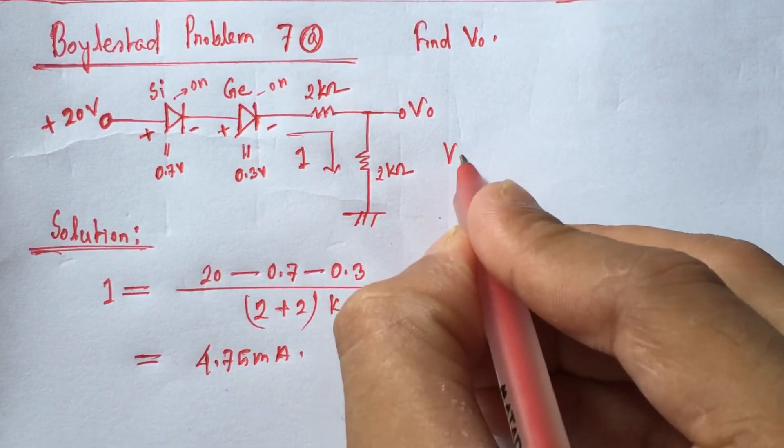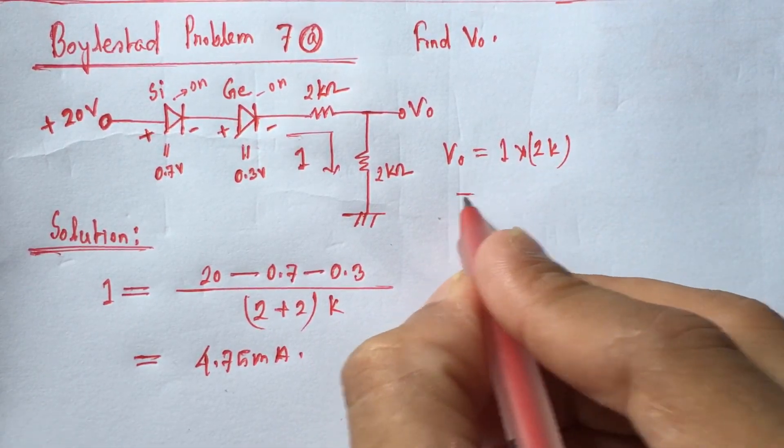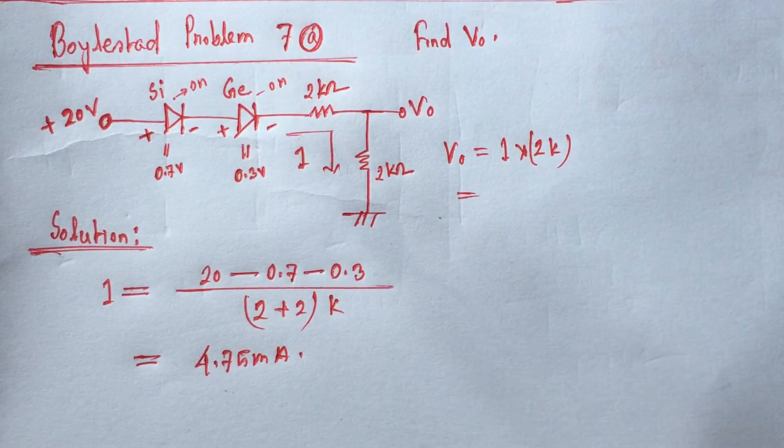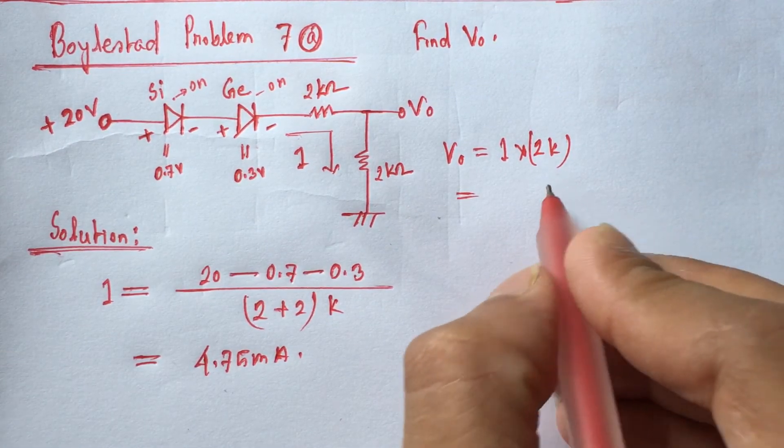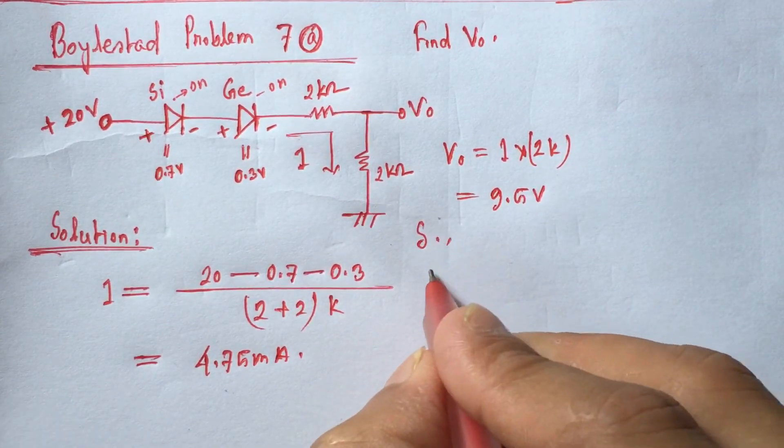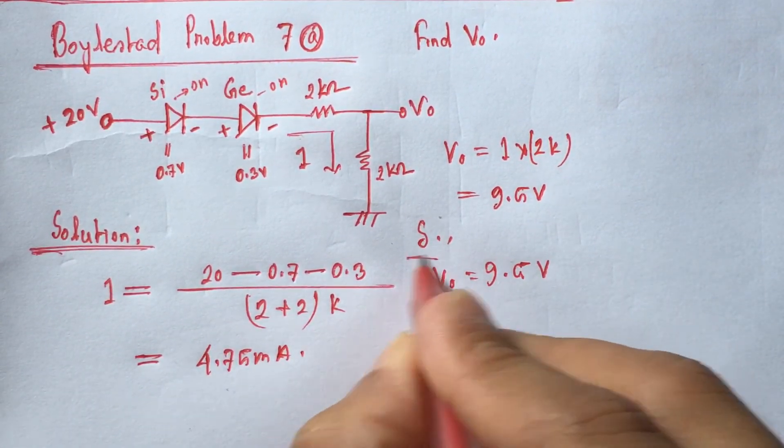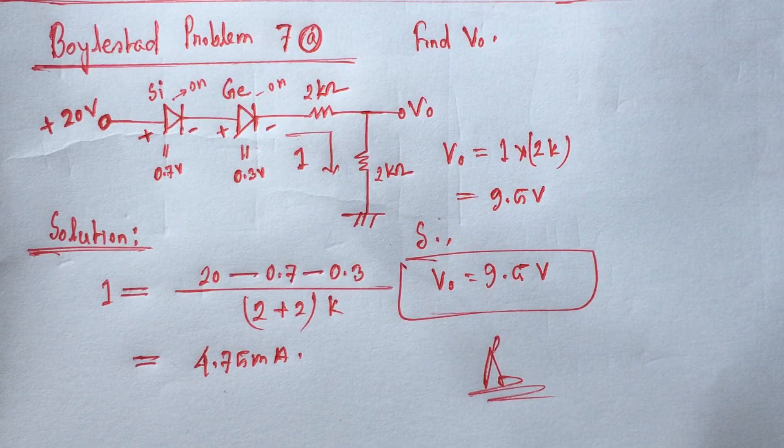So the voltage V0 is I times 2k, that is 9.5 volts. V0 equals 9.5 volts. This is the answer. Thank you for watching this video.